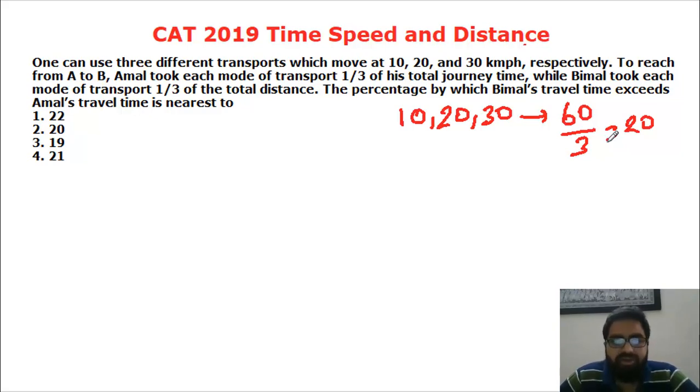For that case what we will do is we will take LCM of the speeds 10, 20 and 30 which is 60. And for each part we will assume the distance is 60. That will make our calculation very easy because we are not given any distances so we can assume it.